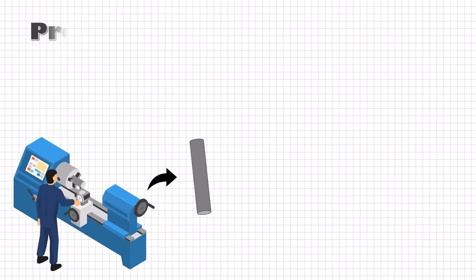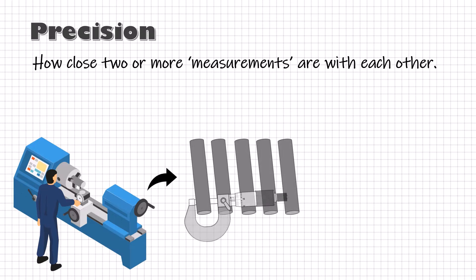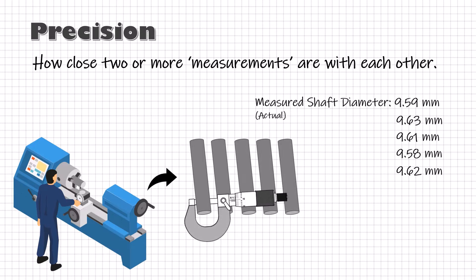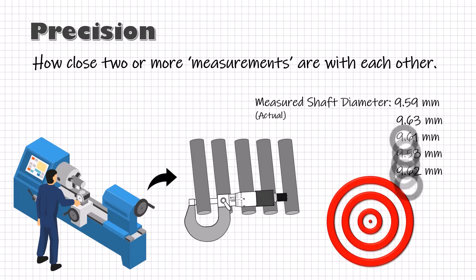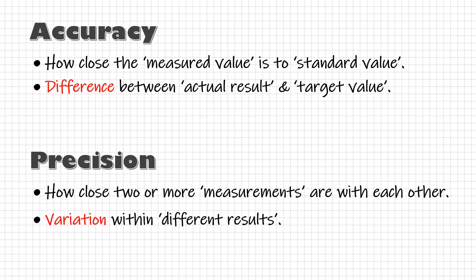Similarly, precision is how close two or more measurements are with each other. If I make five shafts of 10 mm diameter and measure each of them, then how close these five measured values are with each other — the closer these values are, the more precise my process is. So accuracy is how close the result is to the standard value, and precision is the level of variation between results, with no relation to the standard value.